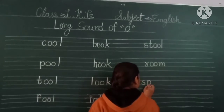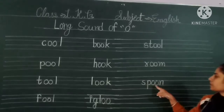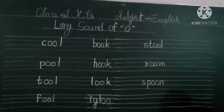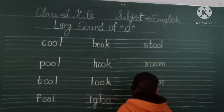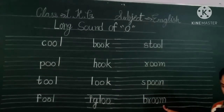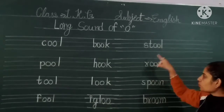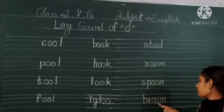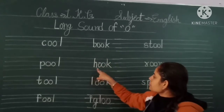S-P Double O N — Spoon. Spoon. Next slide. B-R Double O M — Broom. B-R Double O M — Broom. Yes. S-E Double O — Stool. R Double O — Room. S-P Double O — Spoon. Stool, Room, Spoon. B Double O — Book. H Double O.